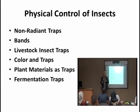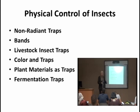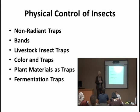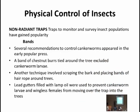الطرق الفيزيائية للمكافحة تعني بدون مواد كيميائية. ومنها: non-radiant traps، وbands، وlivestock insect trap، وcolor trap، وlight trap، وplant materials as trap، وfermentation trap. المصائد الفيزيائية تجمع الحشرات لمصدر واحد بدل مكافحة المنطقة بالكامل. Non-radiant traps لا تعتمد على الإشعاع أو الضوء أو الألوان.